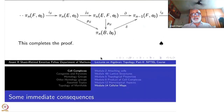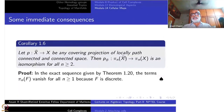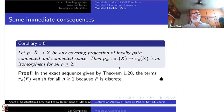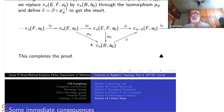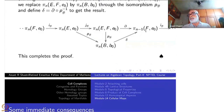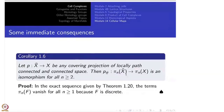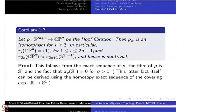This means p-check from pi_n of the total space X-bar to pi_n of the base X is an isomorphism for all n greater than or equal to 2. Why only n ≥ 2? Because when n = 1, pi_0(F) is not trivial — it has several components, not a single point. For n = 1, we already know the answer from our study of covering space projections.